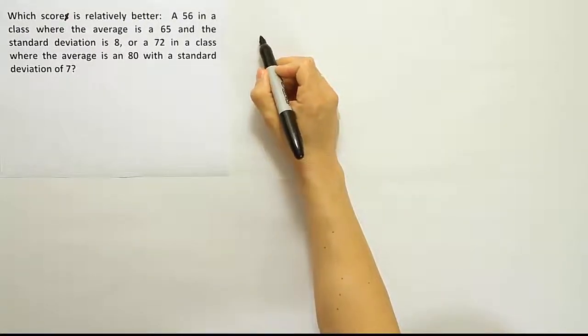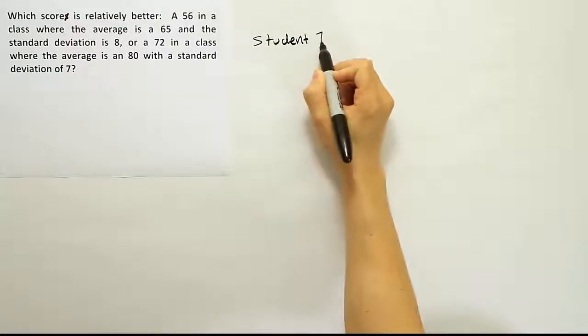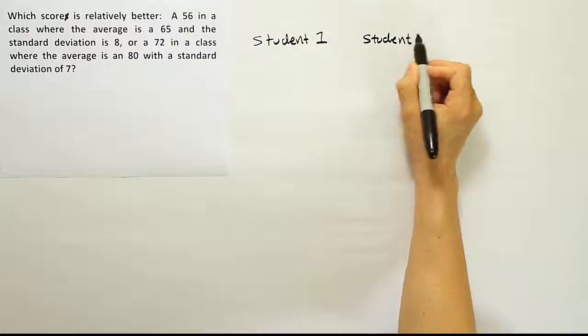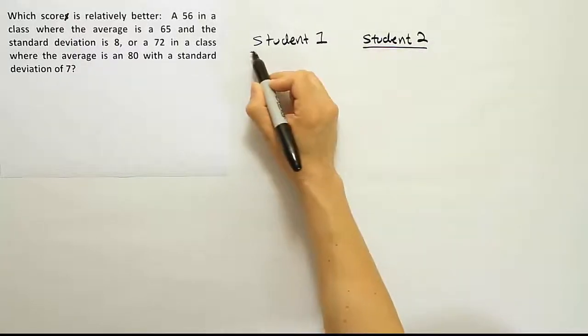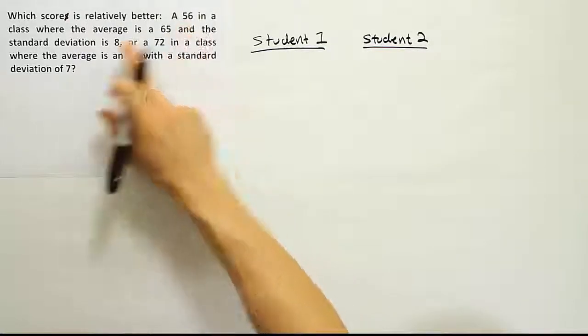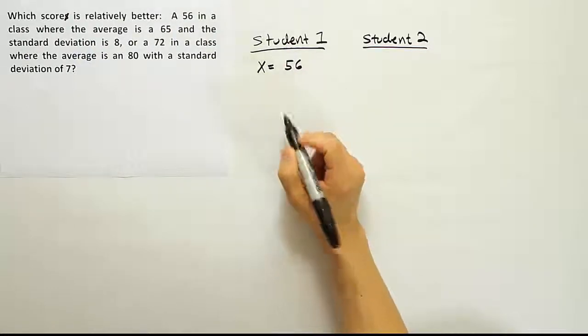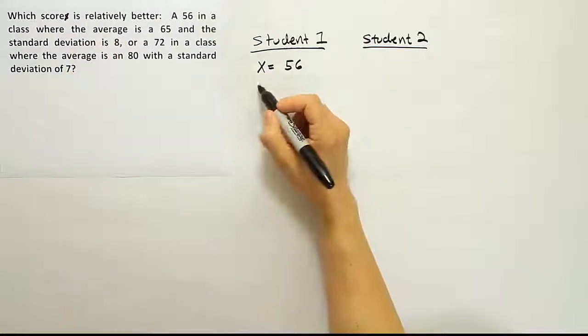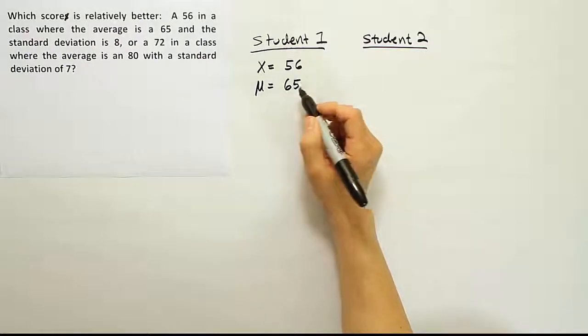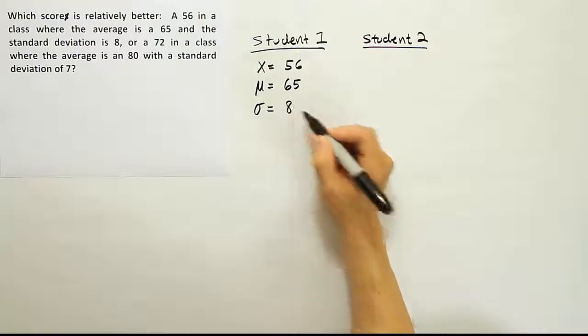What you want to do is organize the information in the problem under a list. So I'm going to say student 1 and student 2. A 56 in a class, so that means student 1's score was 56. The average in that class, the mean, was 65, and the standard deviation is 8.